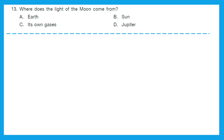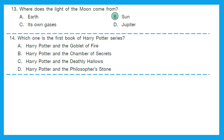Question 13: Where does the light of the moon come from? Is it from Earth, Sun, its own gases or Jupiter? Option B, Sun, is the right answer. Question 14: Which one is the first book of the Harry Potter series? Is it Goblet of Fire, Chamber of Secrets, Deadly Hallows, or Philosopher's Stone? The right answer is option D, Harry Potter and the Philosopher's Stone.